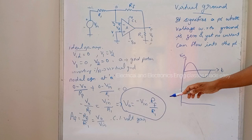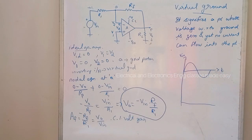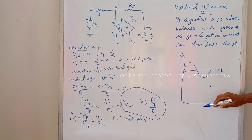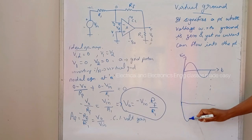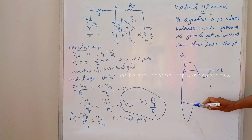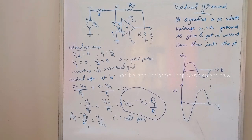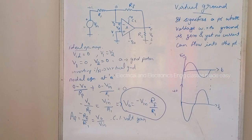The output voltage is V0 equals AF times Vin, which is also phase-shifted by 180 degrees. We can draw the output waveform: it is amplified and 180 degrees out of phase with the input. This is the output waveform for the inverting amplifier.